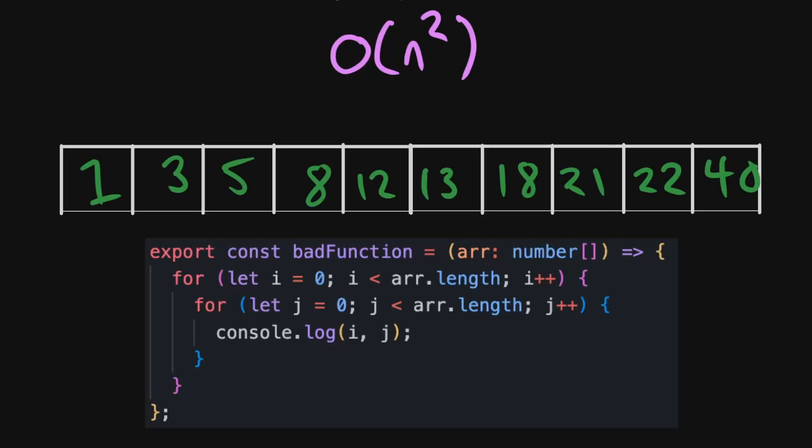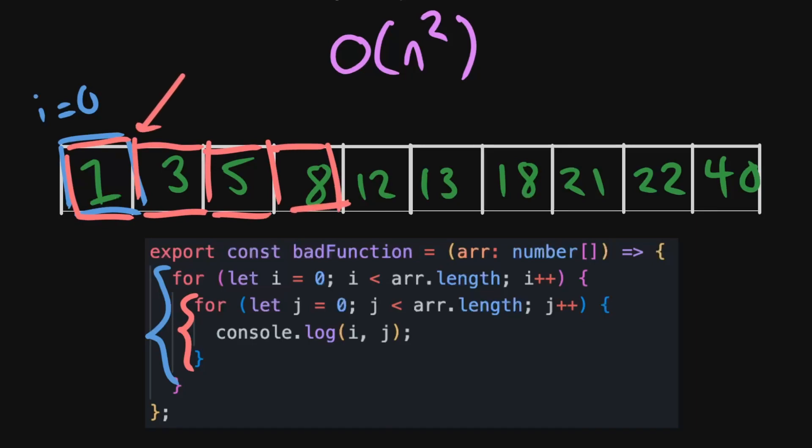So here we've got an example of a bad function, which will run an O(n²) time. You can see that it's n squared because there's a loop within a loop. So what we're doing is we're starting at zero. So i equals zero. And then we're also going into the inner loop, which is here, where i equals zero again. And then we're going along, J equals one, J equals two, J equals three, and i is still zero this whole time.